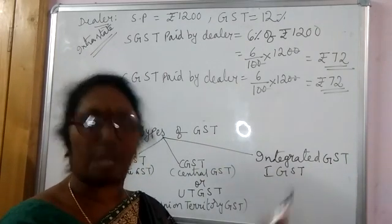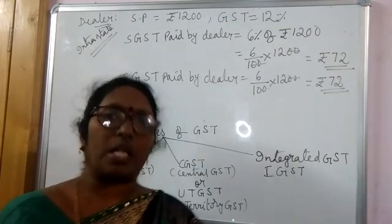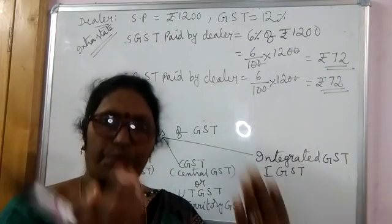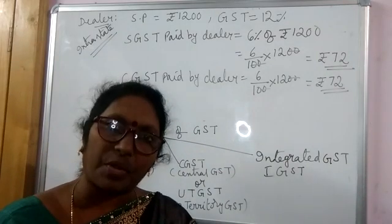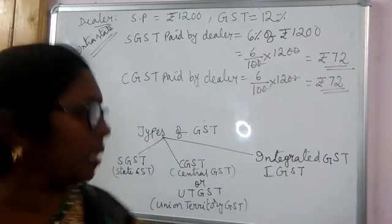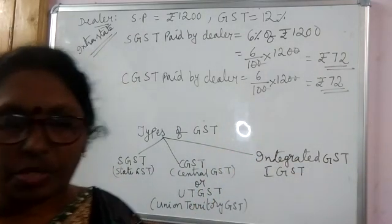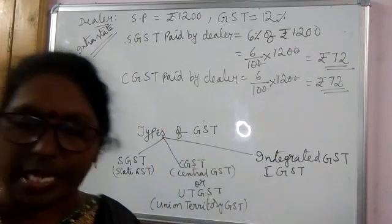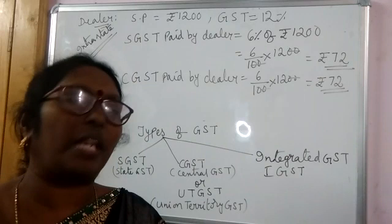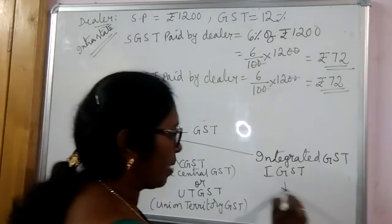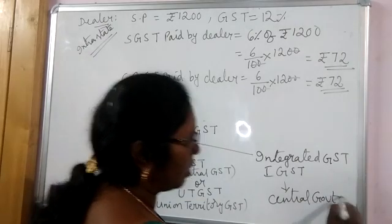If the sales are interstate — meaning state to state, or one state to union territory, or import of goods from other countries to India, or export of goods from India to another country — it comes under IGST, and the entire IGST has to be paid to the central government.